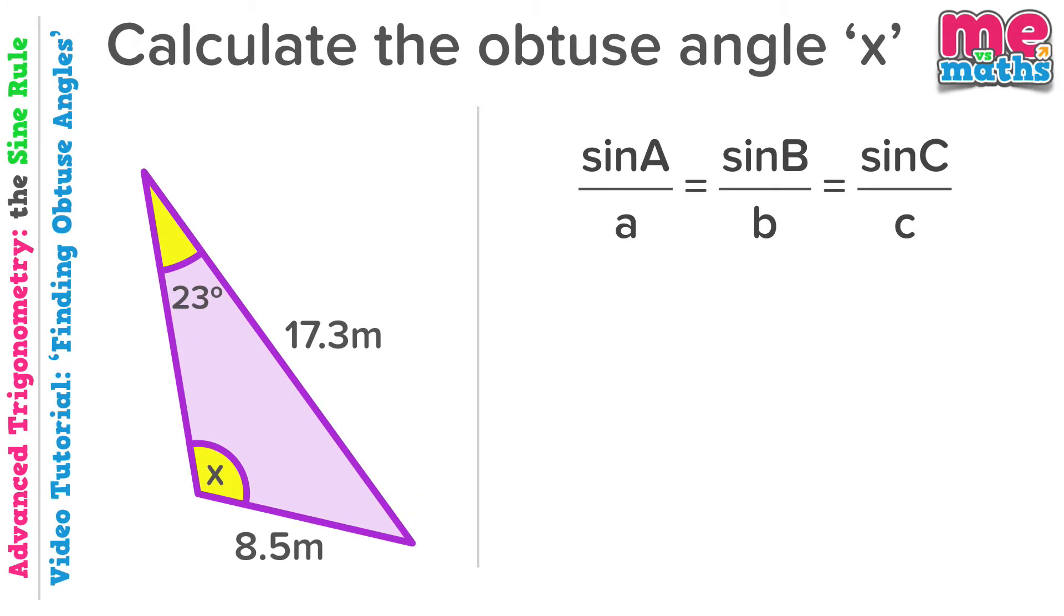Right, let's get straight into an example. Notice immediately that we are explicitly told in the question that we are looking for an obtuse angle, that is an angle greater than 90 degrees.